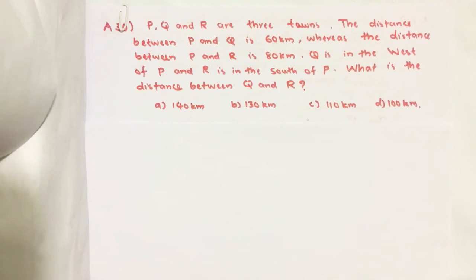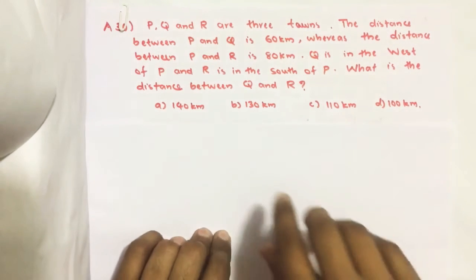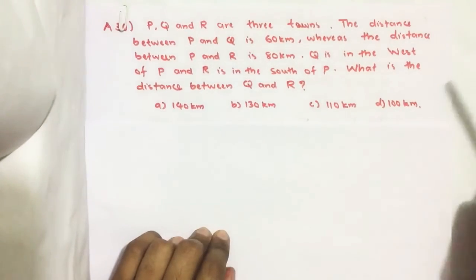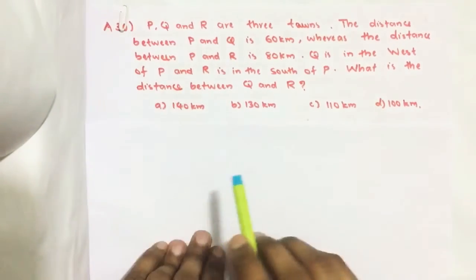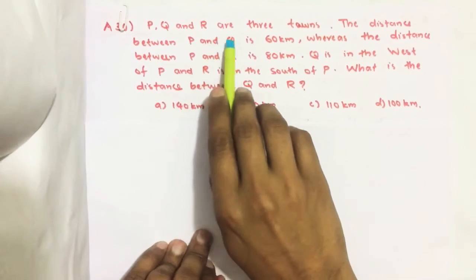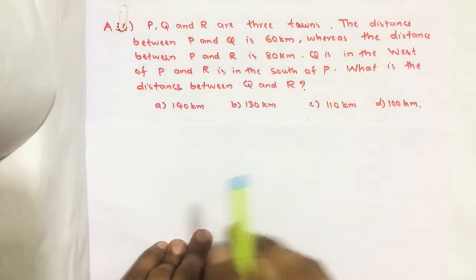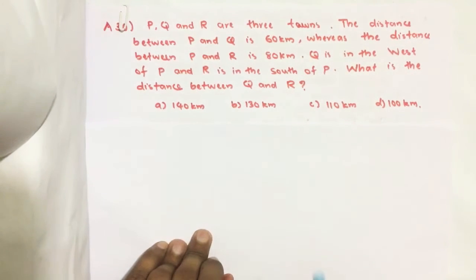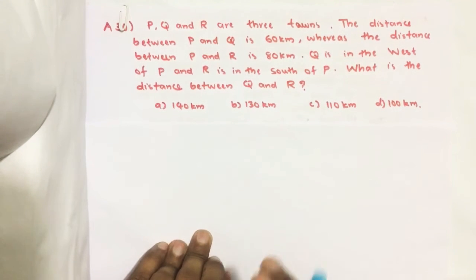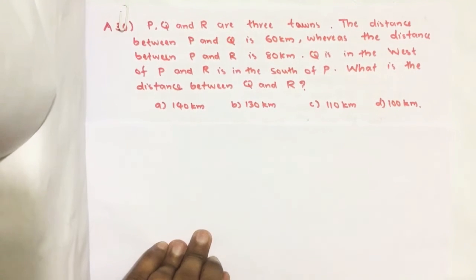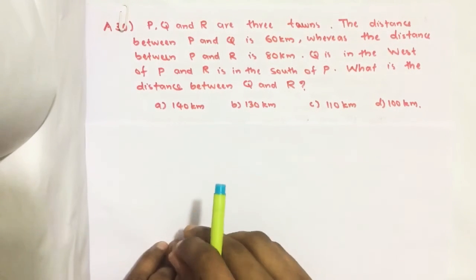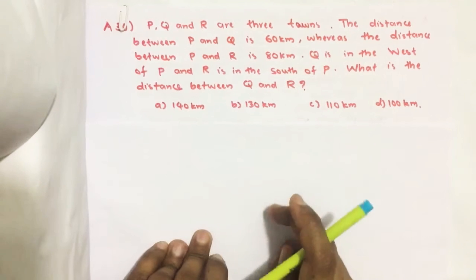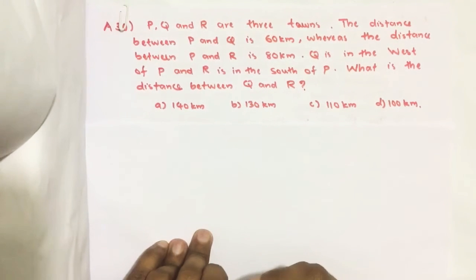Hello everyone. Here I am going to solve 2019 CSAT question number 30 from question paper series A. P, Q, and R are three towns. The distance between P and Q is 60 kilometers, whereas the distance between P and R is 80 kilometers. Q is in the west of P and R is in the south of P. What is the distance between Q and R?